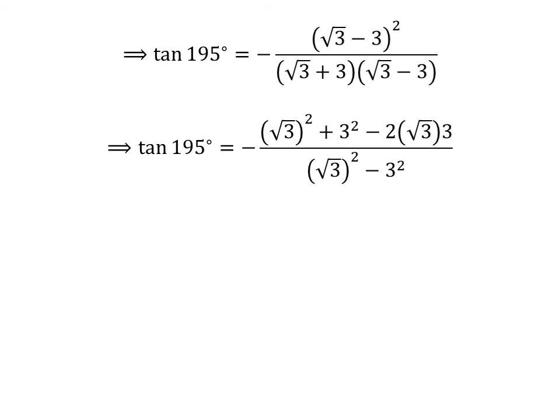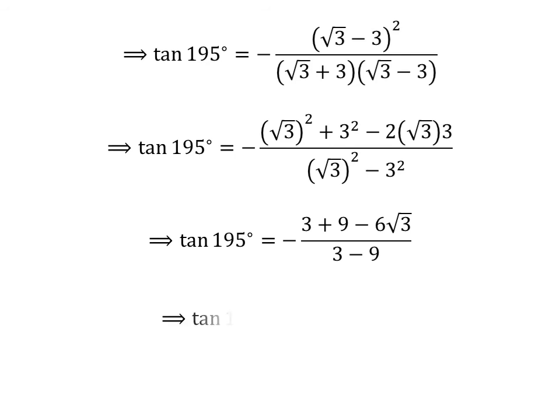Let us expand the square of square root of 3 minus 3. In the numerator, square of square root of 3 minus 3 equals square of square root of 3 minus square of 3, which is 3 minus 9 minus 6 times square root of 3. So, tangent of 195 degrees is equal to minus 3 plus 9 minus 6 times square root of 3, upon 3 minus 9. Further simplification gives tangent of 195 degrees equal to minus 12 minus 6 square root of 3, upon minus 6.